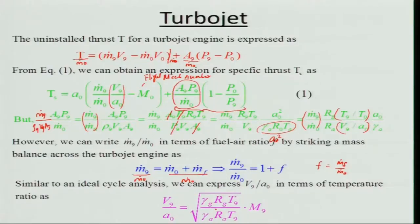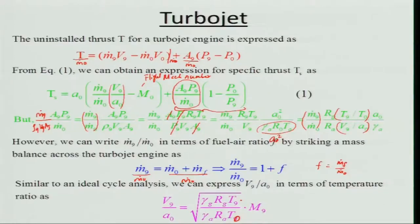We can write V_9/a_0 as √(γ_G R_G T_9 / γ_A R_A T_0) times M_9. Earlier we assumed γ_G = γ_A, but now we do not, and similarly R_G need not equal R_A — these real effects are now coming into the picture. T_9/T_0 and M_9 must be determined. We follow the same approach, but now accounting for γ_G, γ_A, R_G, R_A, efficiencies, and pressure losses.